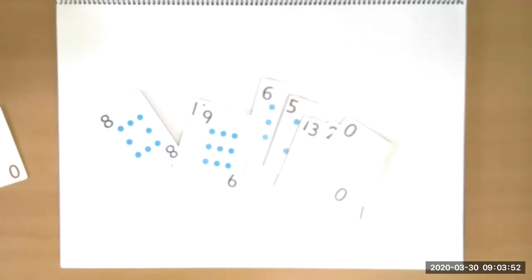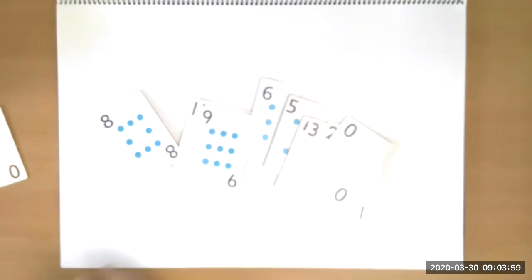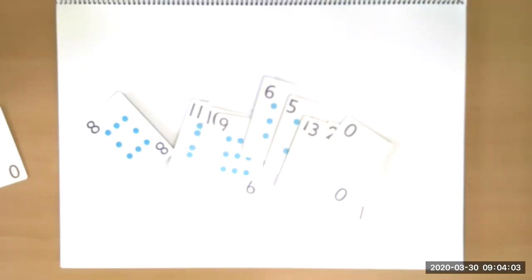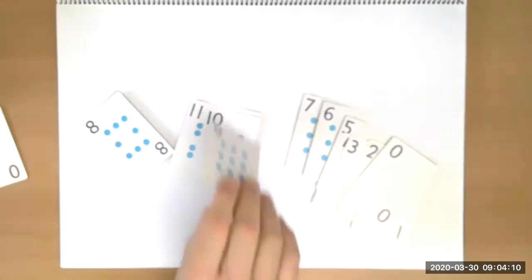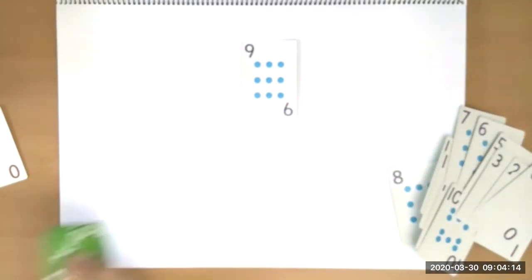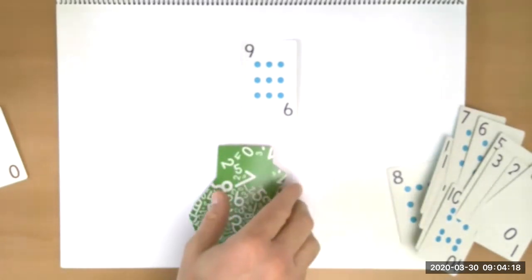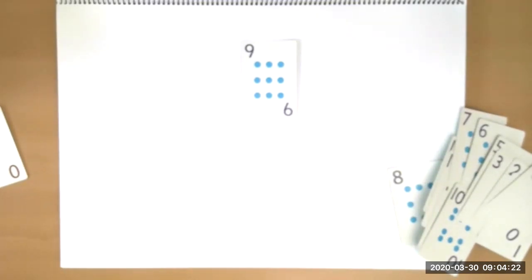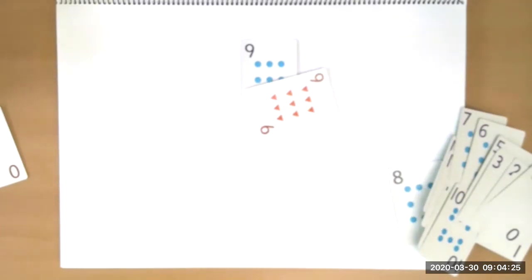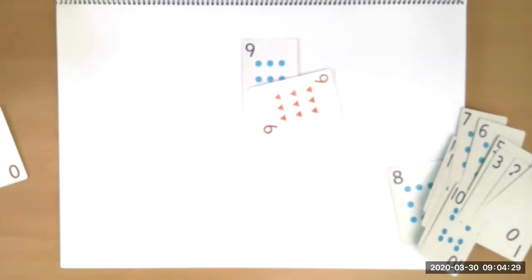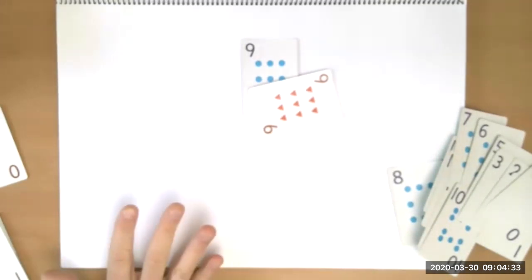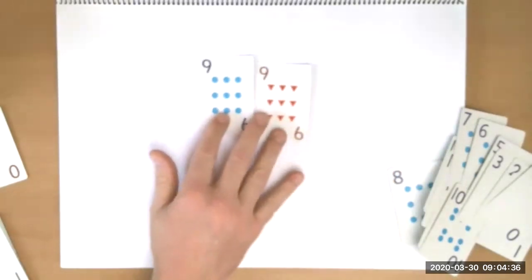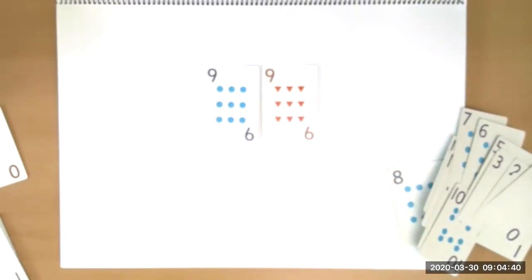We're going to talk about a couple of really basic games and then I'll talk about ways to make them more difficult. A game that most people might be aware of — it depends on your country — but we would know it as Snap. In the standard version of Snap, if you lay a card down, say a nine, and someone else turns their card over and it's also a nine, you would Snap. Some people in Australia use a fly swatter — they call it a swat — but same sort of thing.